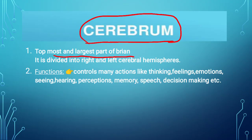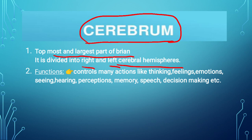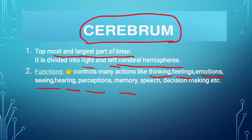The cerebrum is divided into right and left cerebral hemispheres. The right side is called the right cerebral hemisphere and the left side is called the left cerebral hemisphere. The cerebrum controls many actions like thinking, feelings, emotions, seeing, hearing, perceptions, memory, speech, and decision making — all of these are controlled by the cerebrum, which is the largest part of the brain.